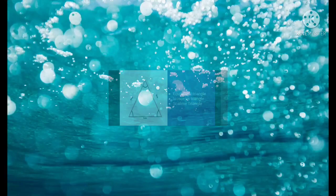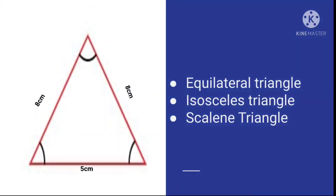Question number 8: There is a figure with sides 8 cm, 8 cm, and 5 cm. Identify this triangle — your options are equilateral triangle, isosceles triangle, or scalene triangle.